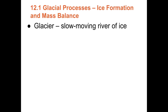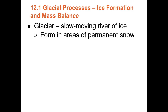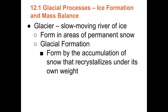A glacier is a slow-moving river of ice. It flows just like a river, except maybe three feet a day — very, very slow-moving. They form in areas of permanent snow. You need snow that lasts year after year. If all the snow melts back in the summertime, you can't have a glacier. Once about 300 feet thick, the ice will flow under its own weight downhill, under the influence of gravity.